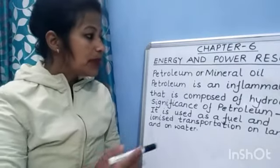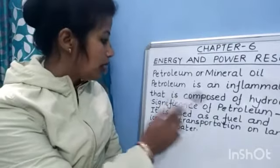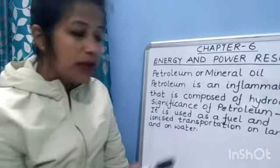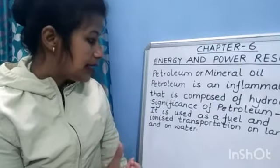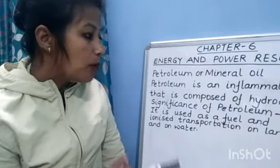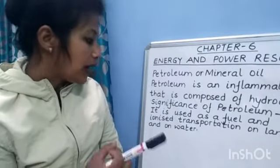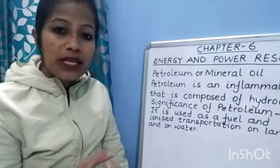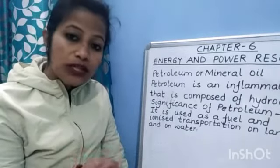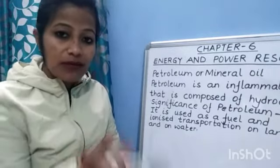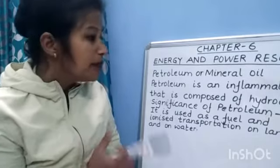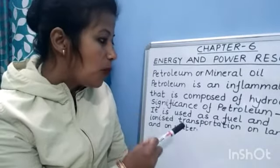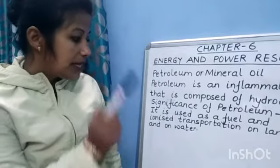Petroleum, or mineral oil, is an inflammable liquid that is composed of hydrocarbons. The meaning of inflammable is also flammable — it is an inflammable liquid composed of hydrocarbons.